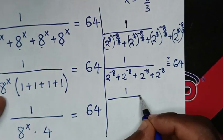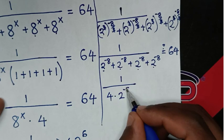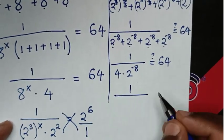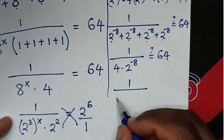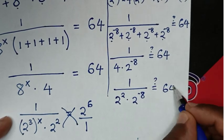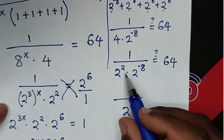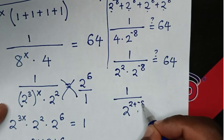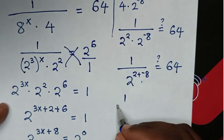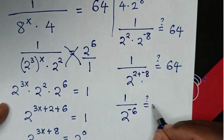We rewrite: 1 over 4 times 2^(−8). Since 4 equals 2^2, we have 1 over 2^2 times 2^(−8). Combining the same base 2, the exponent is 2 plus (−8), giving 1 over 2^(−6), which equals 64.